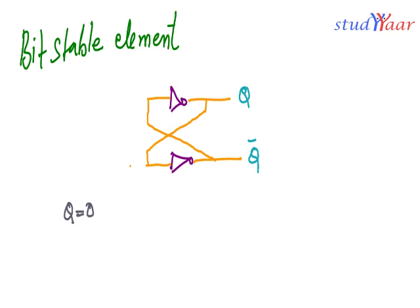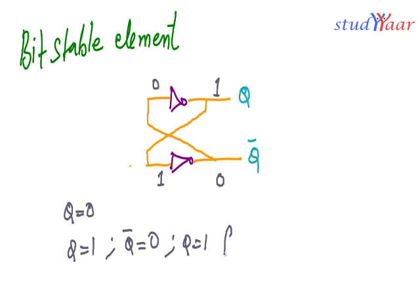Now when Q is equal to one, this is one — the input of the second inverter — so the output is zero. That zero is the input of the first inverter, and the inverted form of zero is one. So when Q is equal to one, you get Q-bar equal to zero and Q equal to one forever. When Q is equal to zero, you get Q-bar equal to one and Q equal to zero forever.